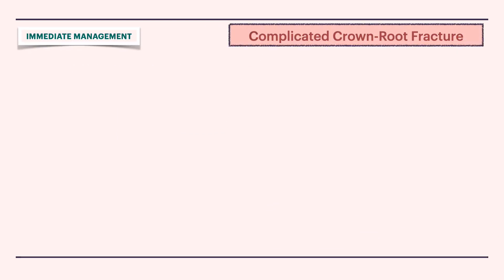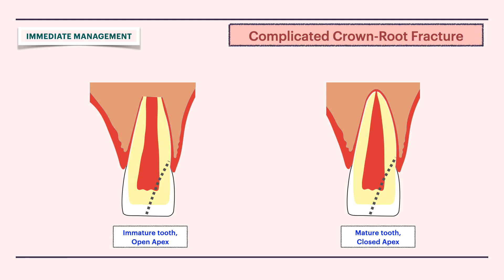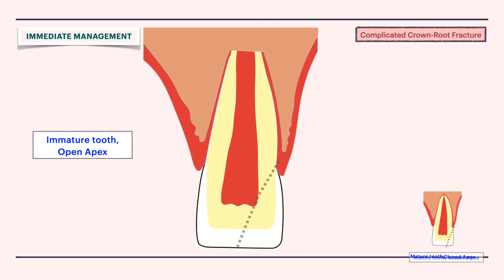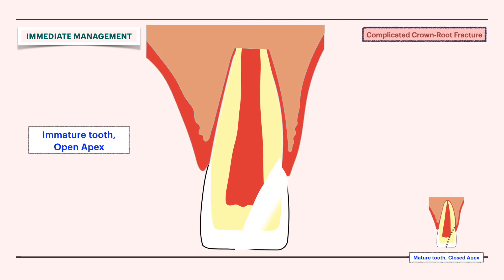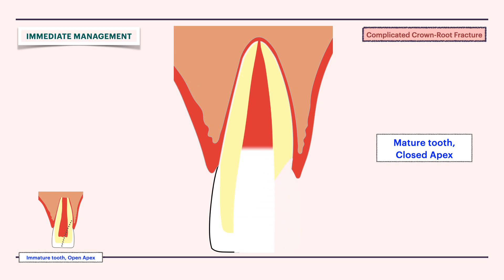In case of complicated crown root fracture, management depends on the stage of root development, i.e. whether the tooth has an open apex or a closed apex. In an immature tooth with an open apex, pulpitomy is generally recommended. While in a mature tooth with a closed apex, it is recommended to go with pulpitomy.